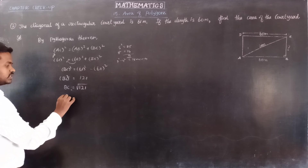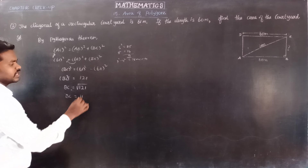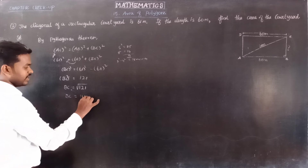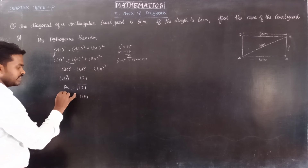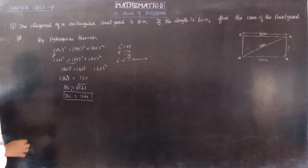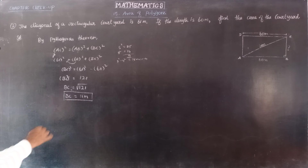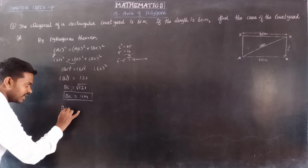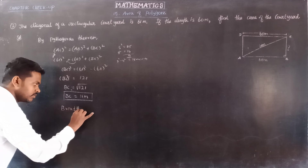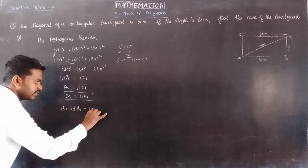Therefore BC = √121 = 11. BC is equal to 11 meters. BC is the breadth of the rectangle. So the breadth of the rectangular field is 11 meters.